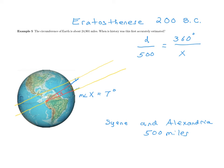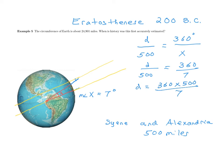With the measure of angle X equal to 7 degrees, we can solve for D: D over 500 equals 360 over 7, so D equals 360 times 500 divided by 7. Using a calculator, that gives approximately 25,714 miles. That is a great estimate for what we know the value to be today — and this was accomplished without leaving this region of the world, using the very angle facts discussed in this lesson.